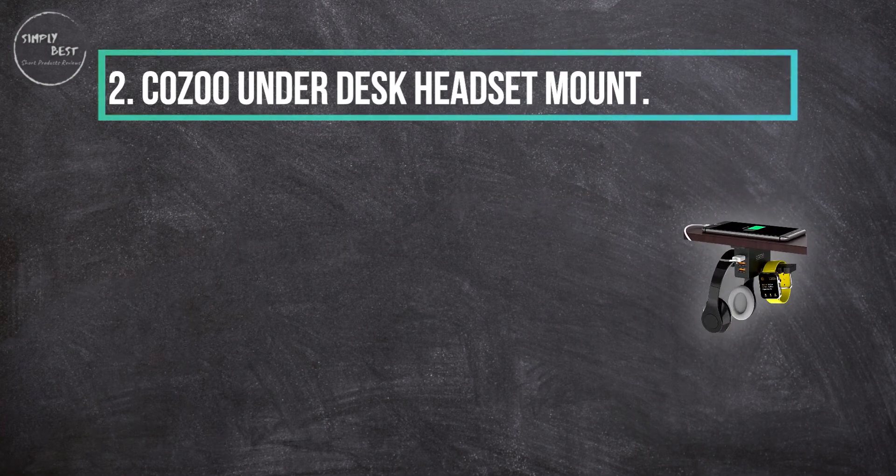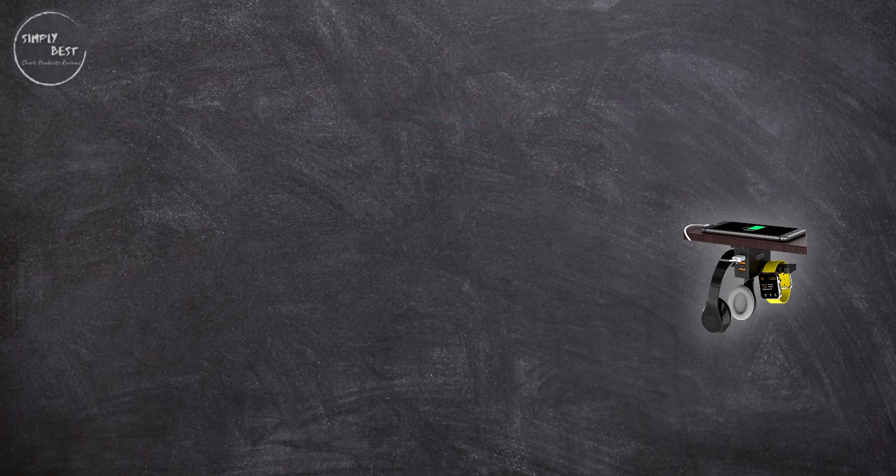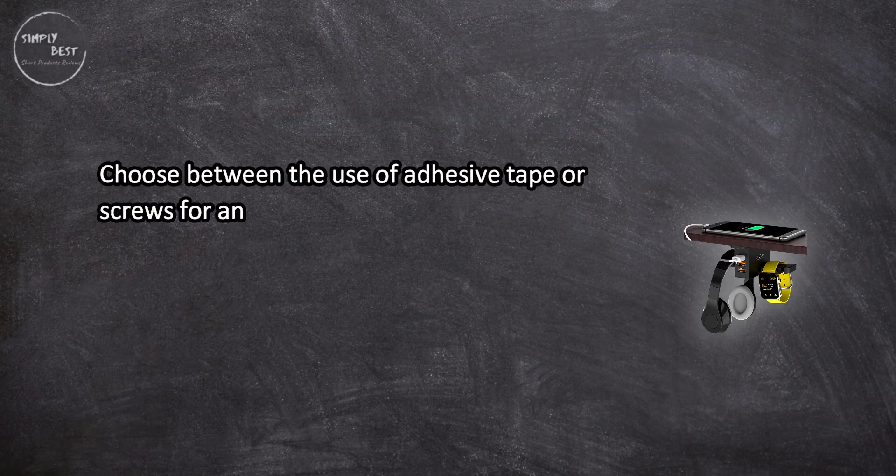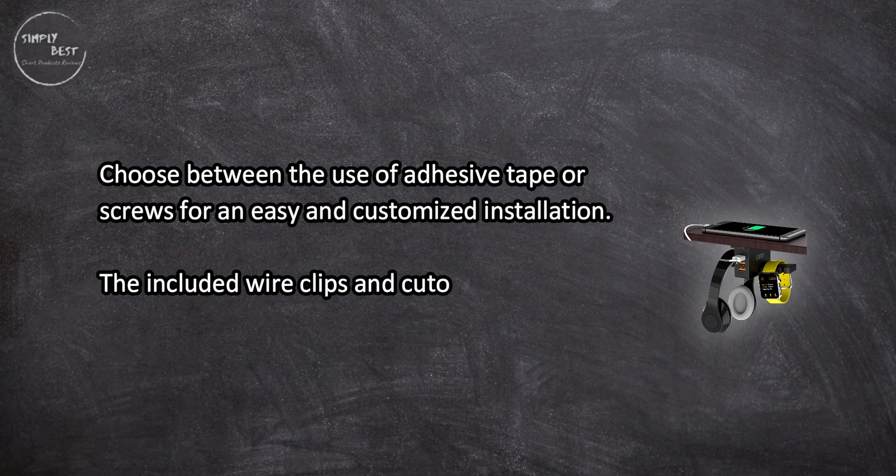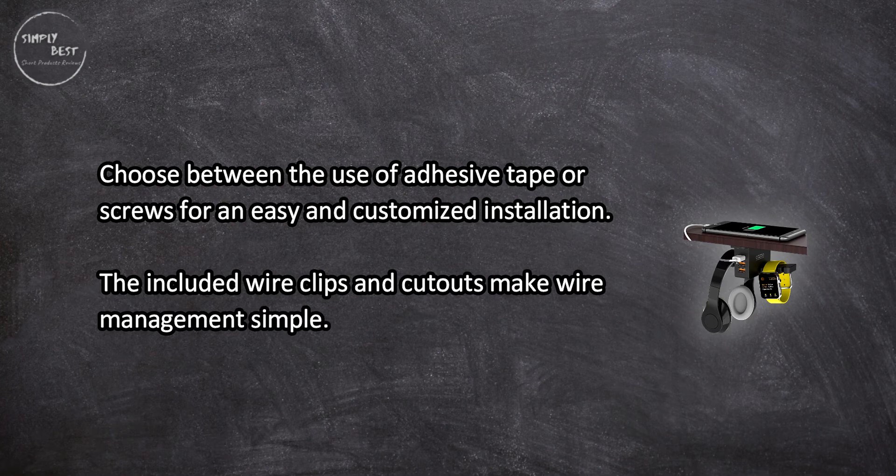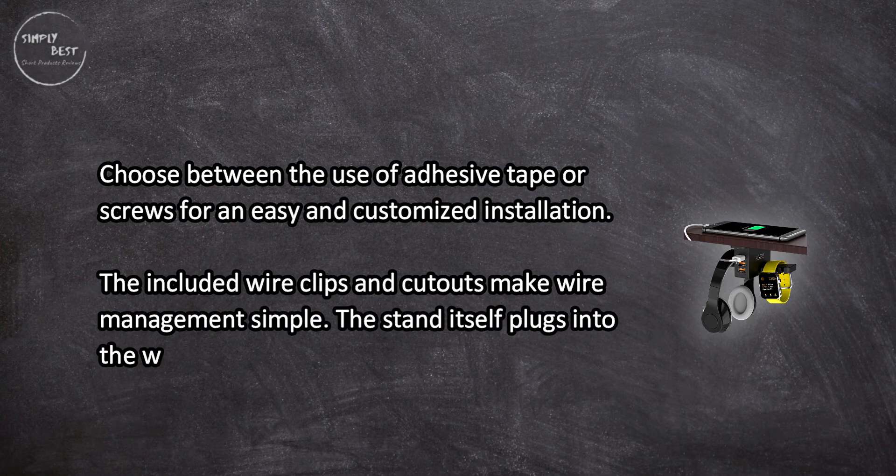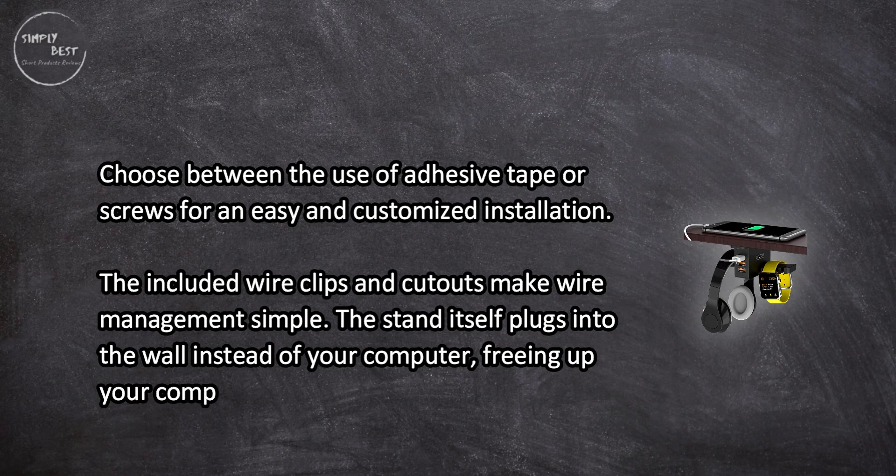At number two, Kozu underdesk headset mount. Choose between the use of adhesive tape or screws for an easy and customized installation. The included wire clips and cutouts make wire management simple. The stand itself plugs into the wall instead of your computer, freeing up your computer's USB ports.